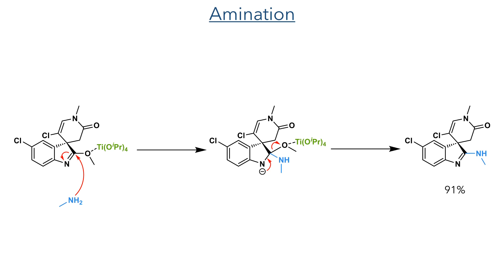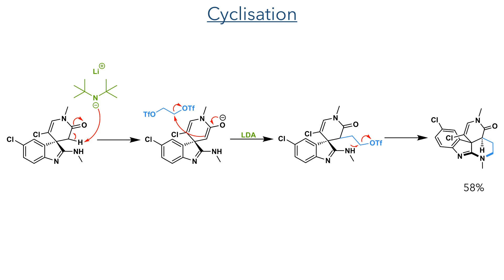This imidate could then be reacted with titanium isopropoxide and methylamine to undergo a substitution reaction, replacing the methyl ether with a methylamine. With this amine in place, they could then carry out the double displacement annulation reaction. The alpha position of the lactam is first deprotonated with LDA, which then attacks glycerol bistrifluoromethanesulfonate. An intramolecular SN2 substitution then takes place, completing the annulation and forming the 6-membered ring in a 58% yield.